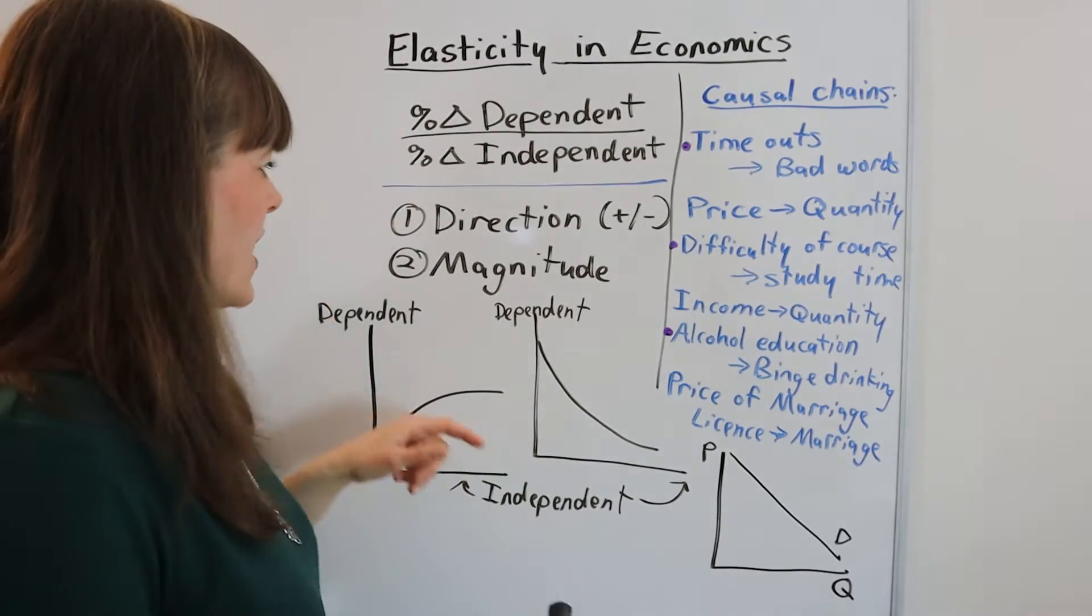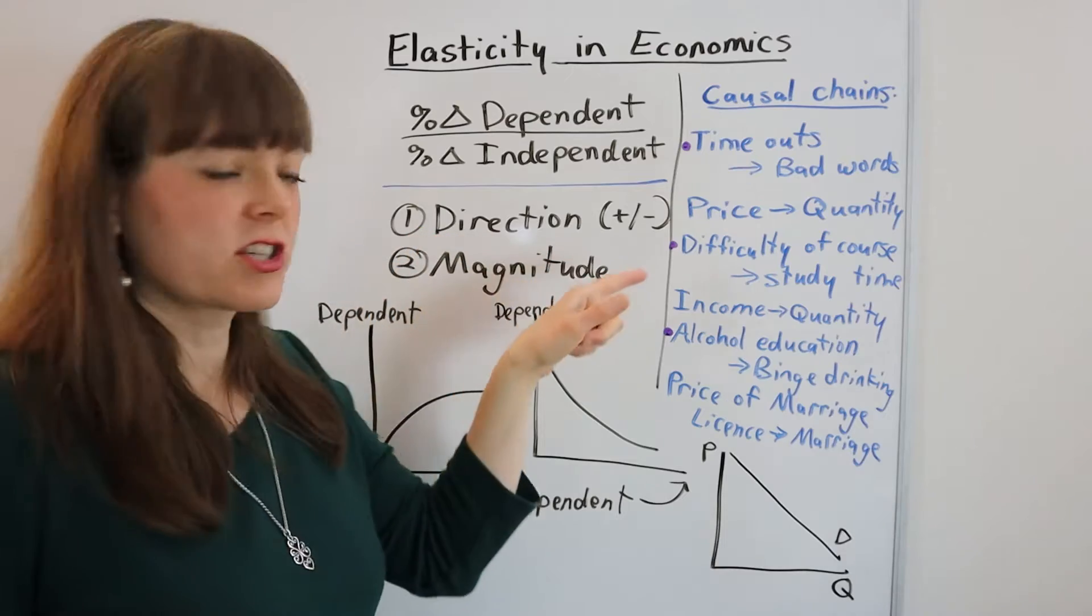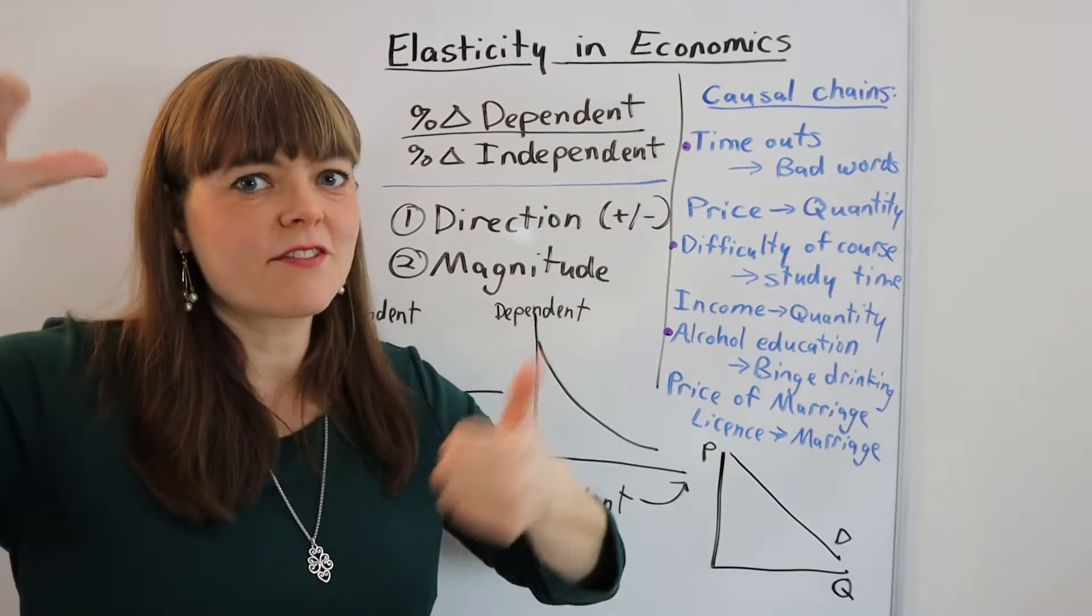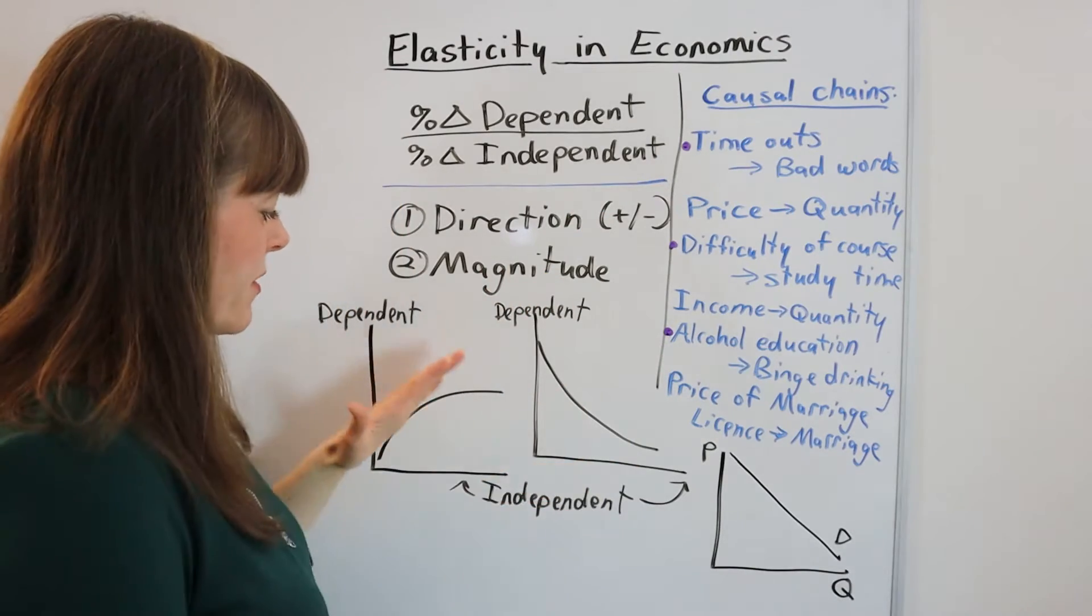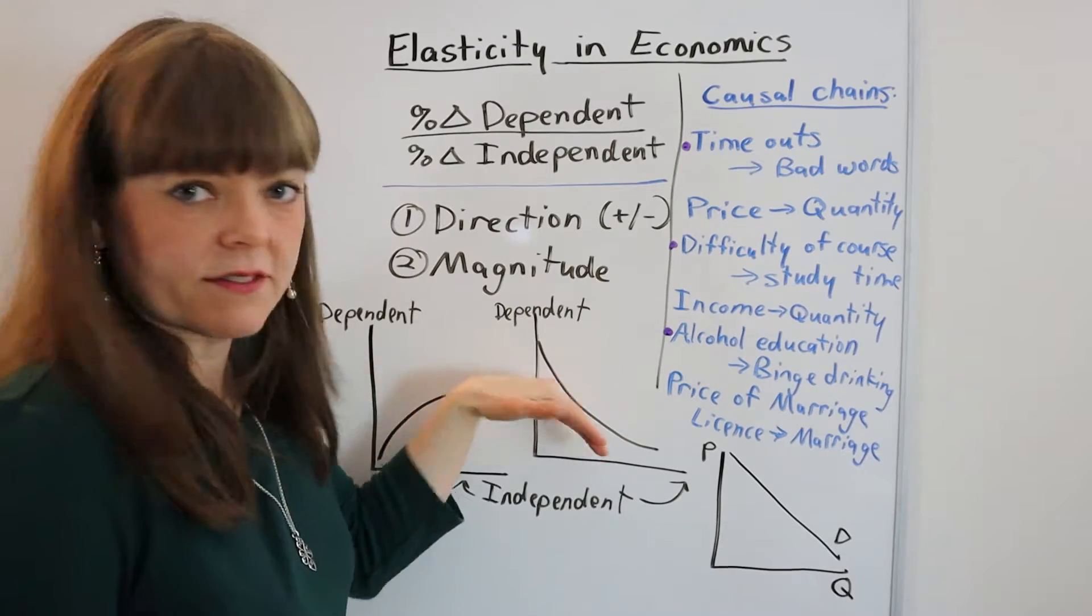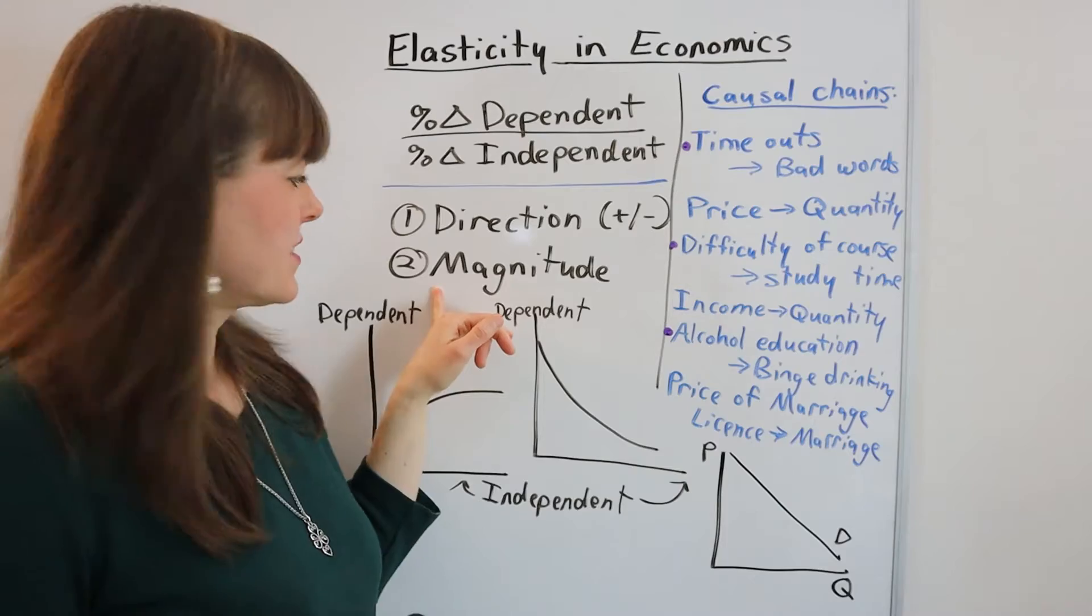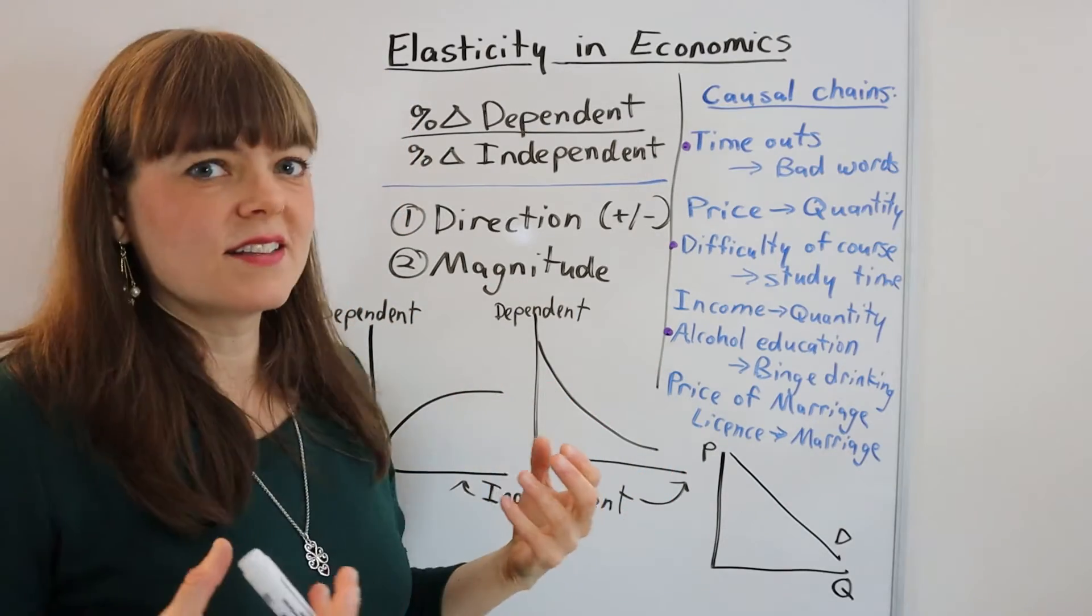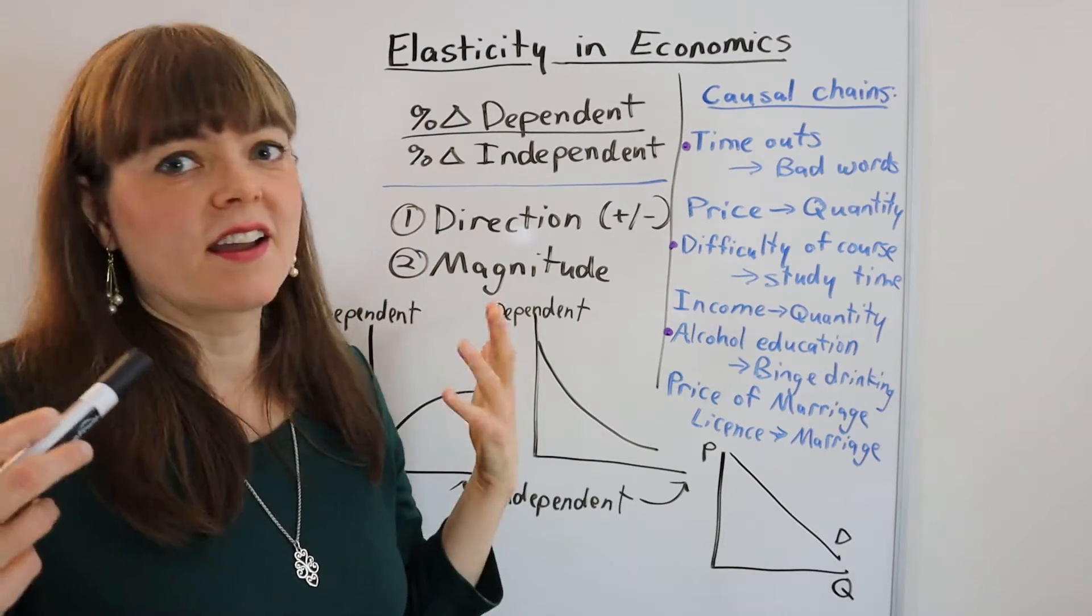Elasticity is going to have two parts to it. One is direction of the variables - is there a positive or a negative relationship between the variables, which will show up in terms of a positive slope or a negative slope on a graph. The second piece to elasticity is the magnitude, how responsive is the dependent variable when you change the independent variable.